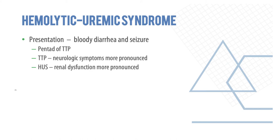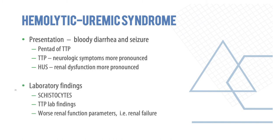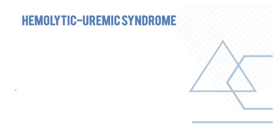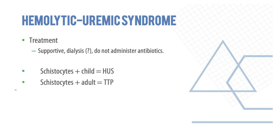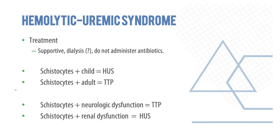The key differentiating features between TTP and HUS: neurological symptoms are more pronounced in TTP, whereas renal dysfunction is more pronounced in HUS. Lab findings show schistocytes in both; however, worse renal function parameters are a feature of HUS. Treatment is supportive with dialysis; antibiotics should not be given. Easy memory aid: schistocytes in a child suggest HUS; in an adult, TTP. Schistocytes with neurological dysfunction indicate TTP; with renal dysfunction, HUS.